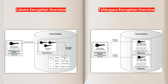You can encrypt individual table columns or an entire table space. At column level, you can encrypt data using selected table columns, whereas table space encryption enables you to encrypt all of the data stored in a table space. Be careful that you do not mix the two. For example, suppose you encrypt a table column and then encrypt its surrounding table space — this double encryption can cause performance problems.